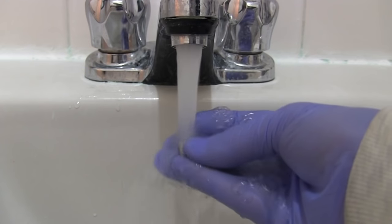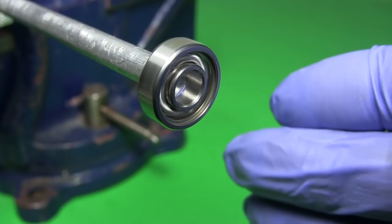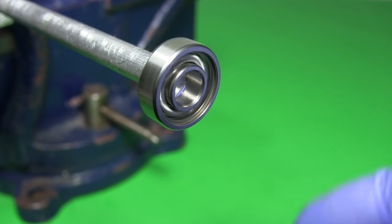After letting it sit for a bit, I rinse out the paint thinner with hot water. After letting it dry, it now turns like this. Much, much better.